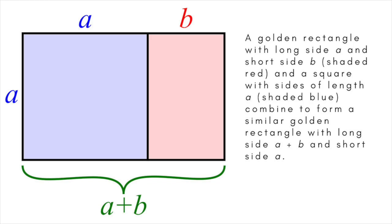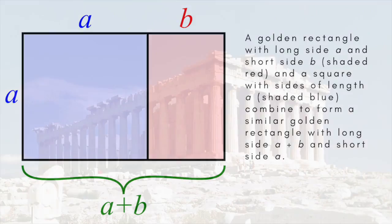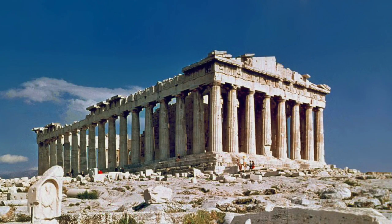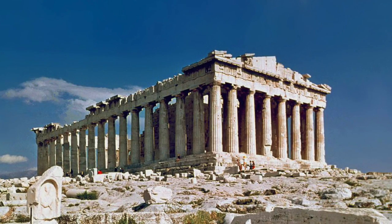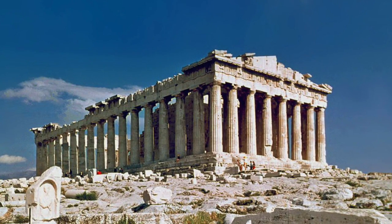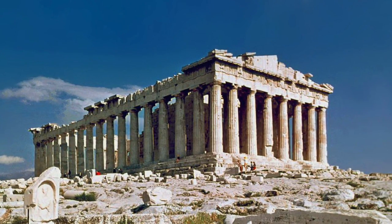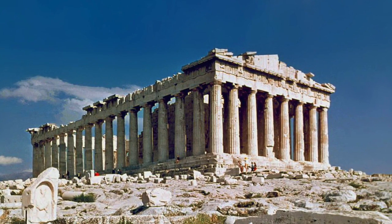The so-called golden rectangle is one whose sides a and b stand in the golden ratio. It's famously and controversially said to have great aesthetic appeal and is closely approximated by the dimensions of the front of the Parthenon in Athens.